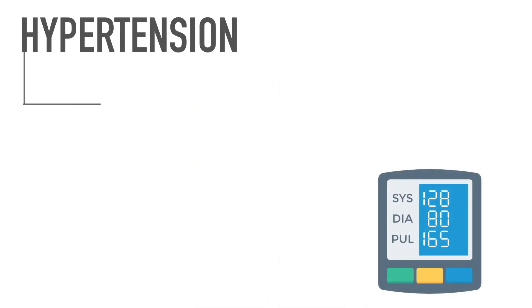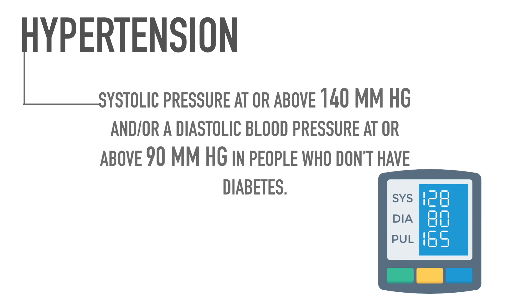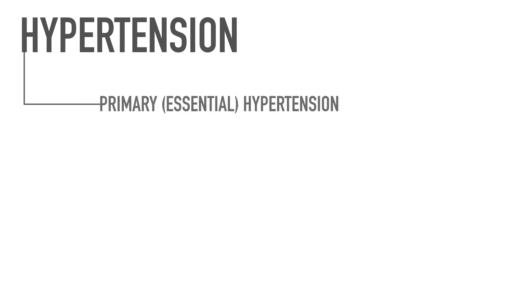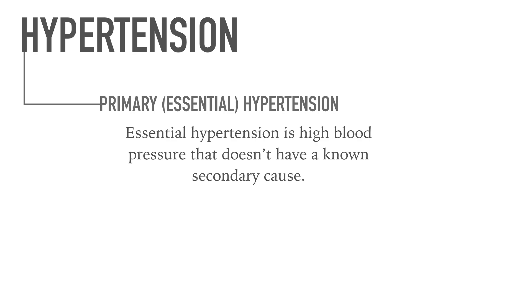When the force of blood against the artery walls is too high, we call it hypertension. By definition, hypertension is a systolic pressure at or above 140 mmHg and a diastolic blood pressure at or above 90 mmHg in people who don't have diabetes. There are two types of hypertension. Number one is primary, also called essential hypertension — high blood pressure that doesn't have a known secondary cause. For most adults, there is no identifiable cause, and it tends to develop gradually over many years.